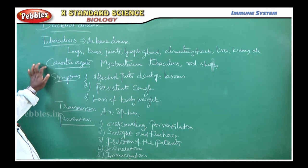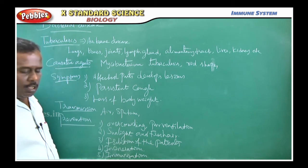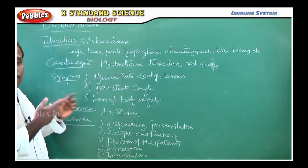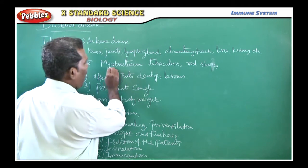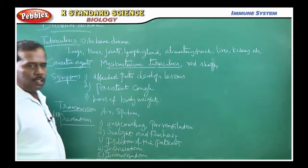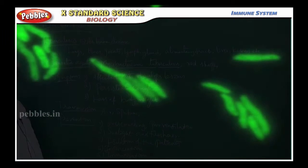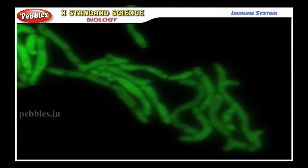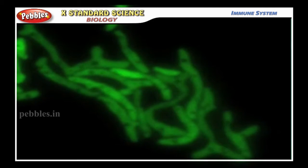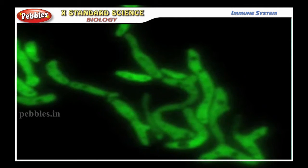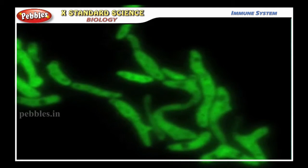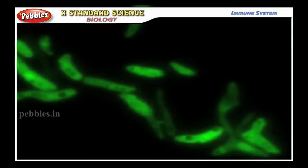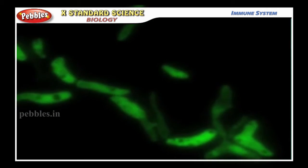Next, the causative agent of tuberculosis. Mycobacterium tuberculosis causes TB. In short form, it is called as TB. And it is rod-shaped bacteria.